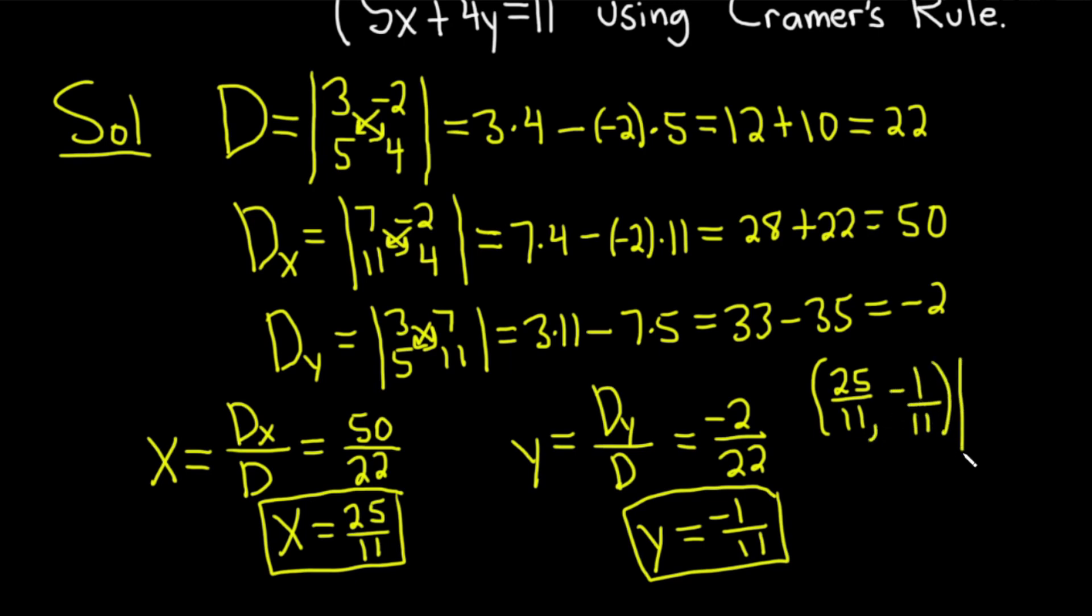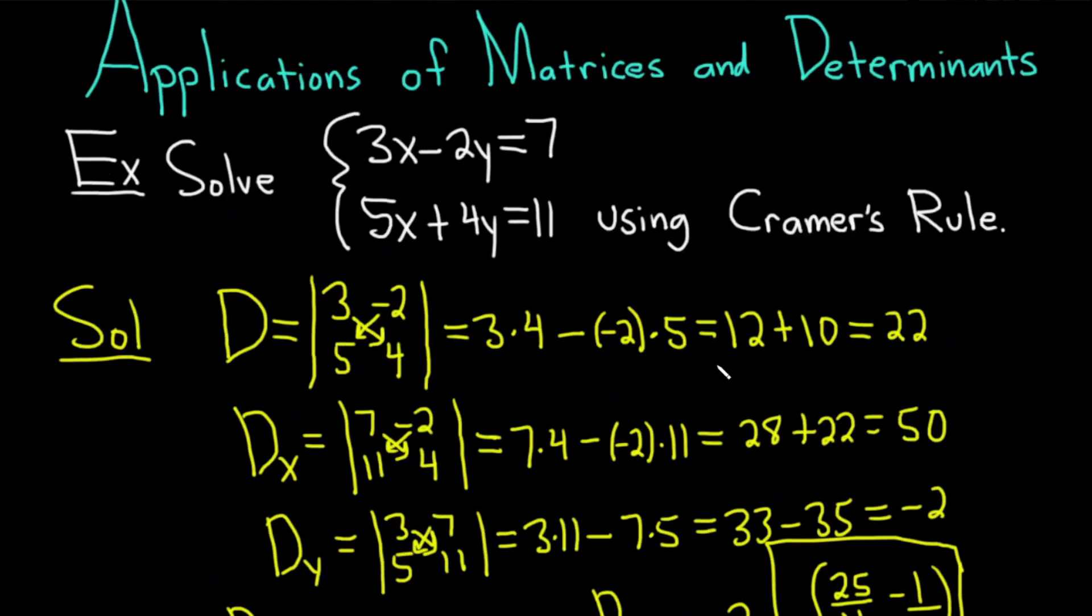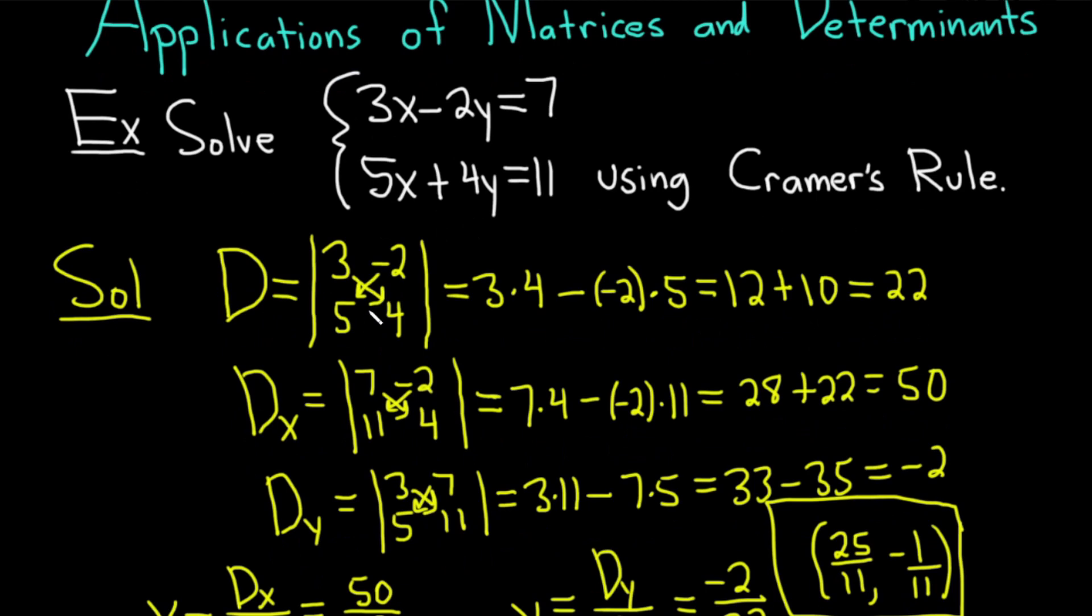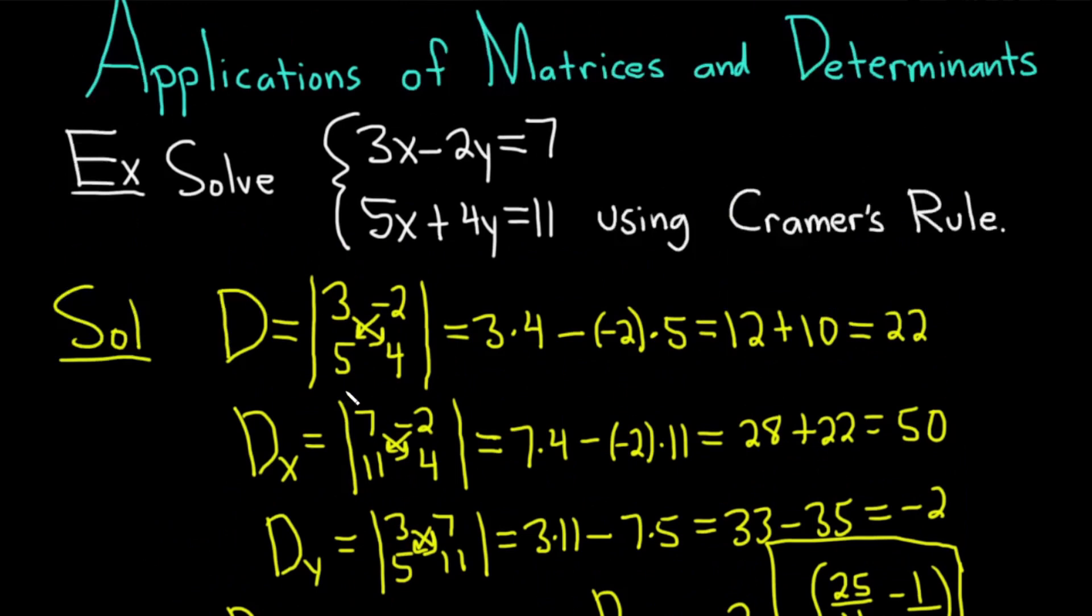So just an alternative way to solve systems of equations using Cramer's rule. This also works for systems with three equations and three variables. If you had x, y, and z, and you had three equations, it would work. Except in that case, it'd be a much longer problem because you would have three by three determinants. So it would take a lot more work.